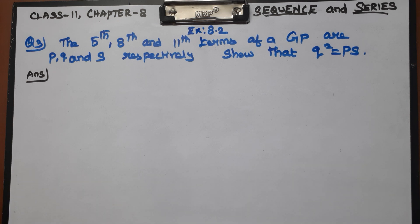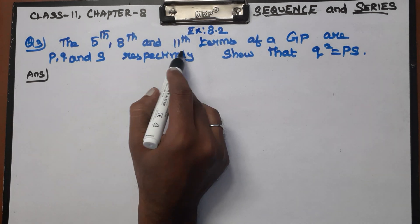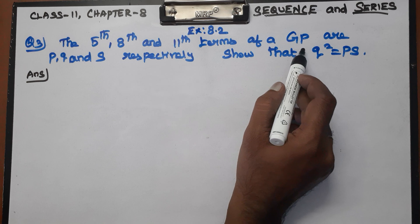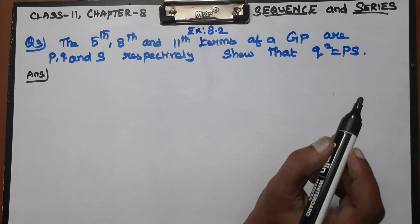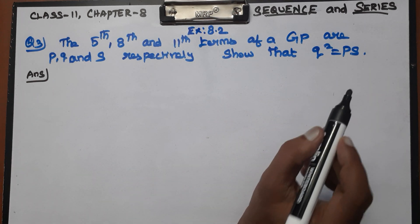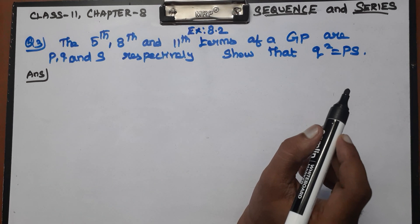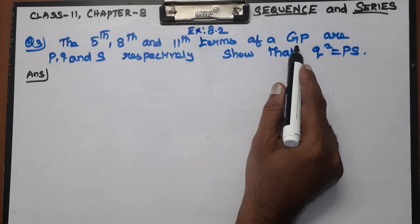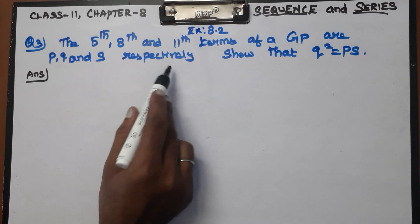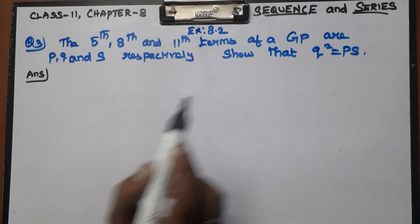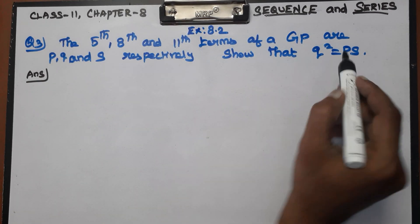Question 3: The 5th, 8th, and 11th terms of a GP are P, Q, and S respectively. What is the general term of your GP? We need to show that Q² = PS.